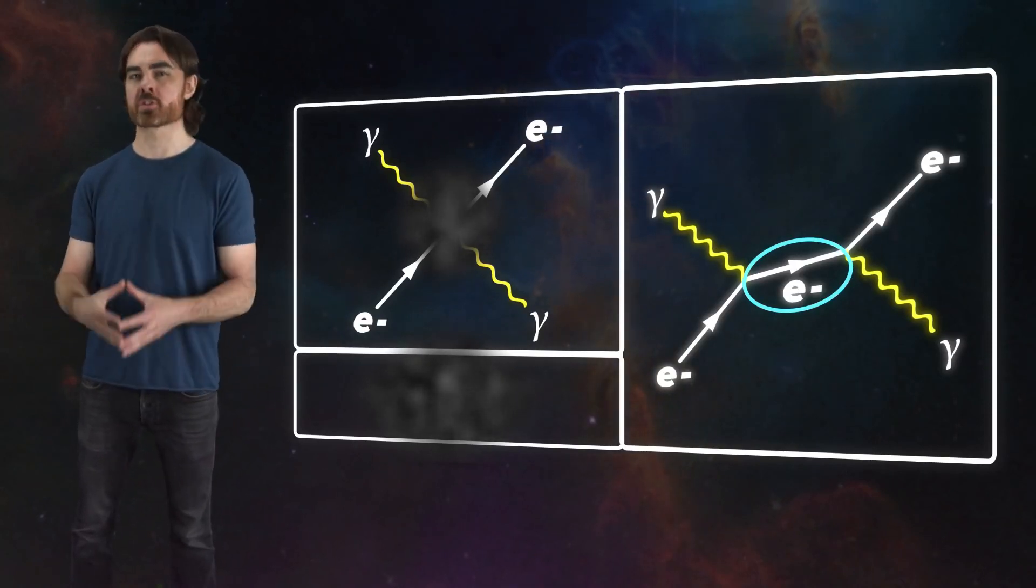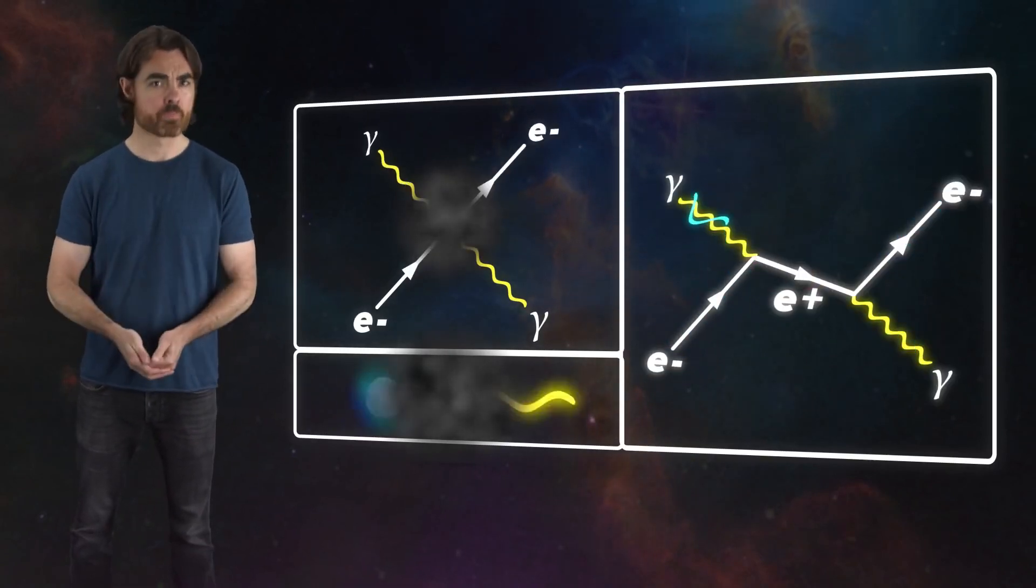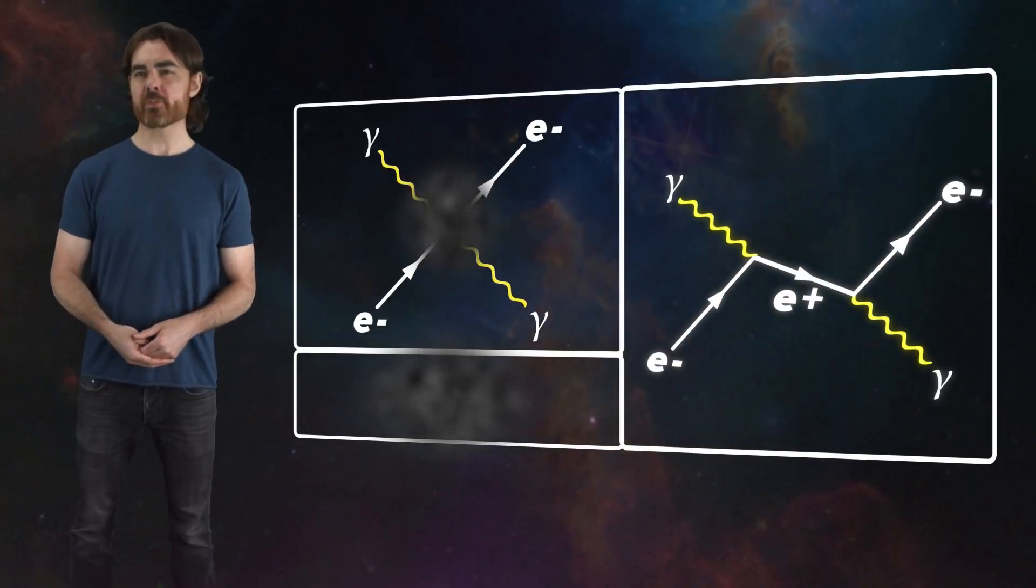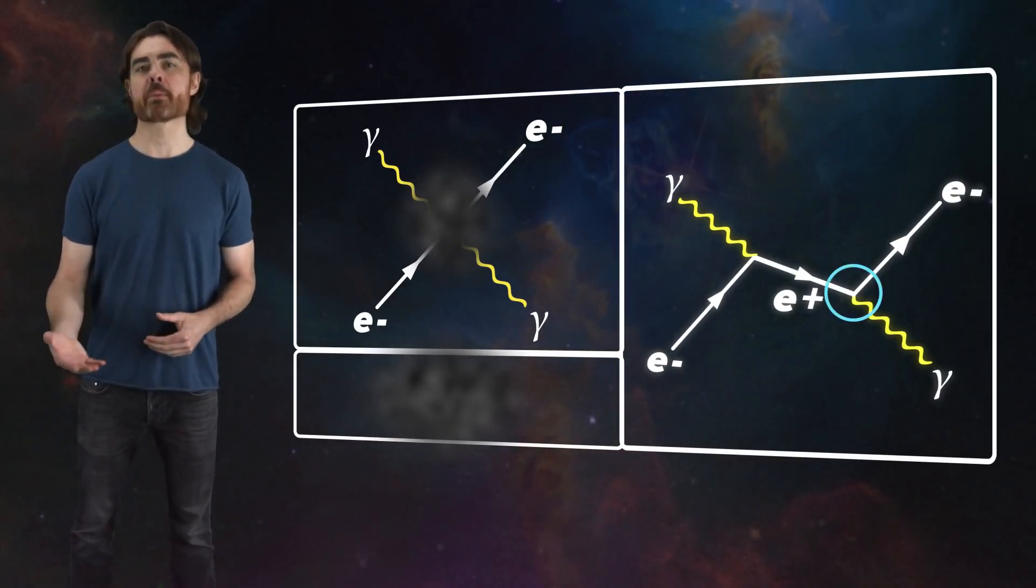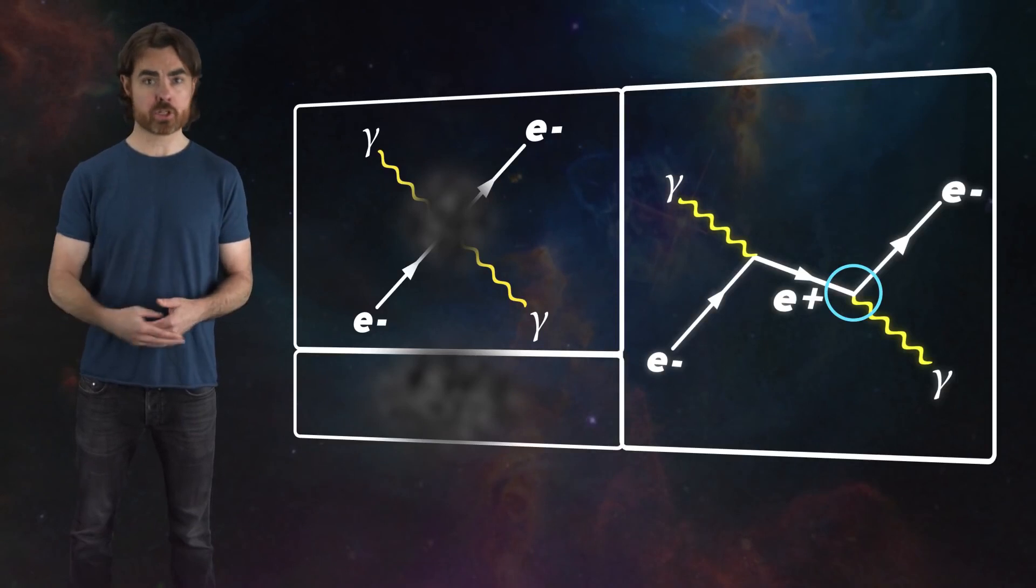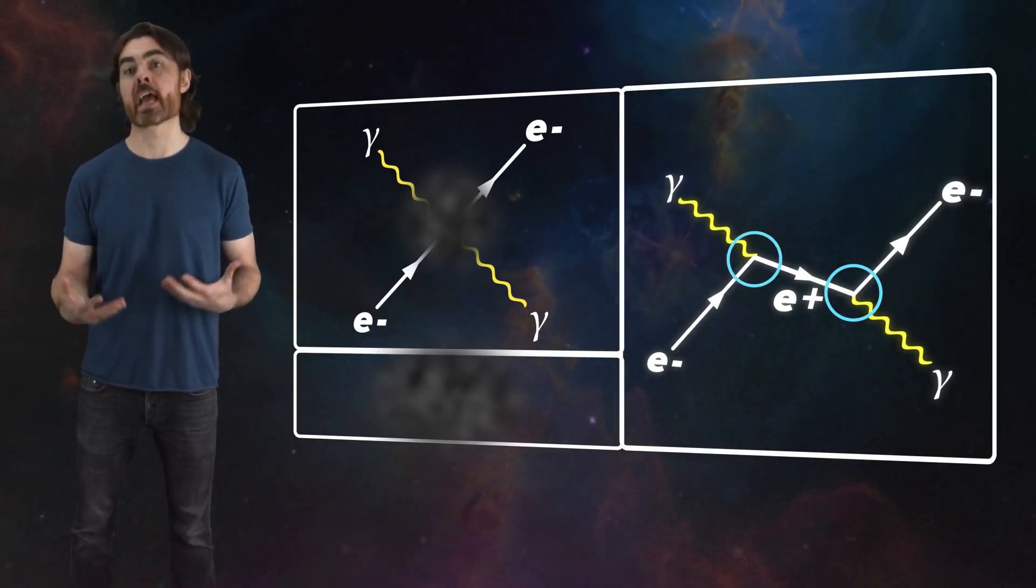Mathematically, a time reversed electron looks exactly like a positron. Like this. The same particles go in and out, but now the interactions look very different. Instead of an electron emitting and then absorbing a photon, we have on one side that incoming photon creating an electron-positron pair. That new electron becomes our outgoing electron, but the positron annihilates with the incoming electron to produce the outgoing photon. These may seem like wildly different processes, but in the math represented by Feynman diagrams, they're exactly the same.